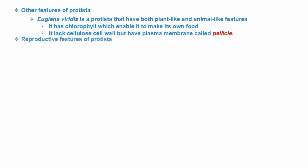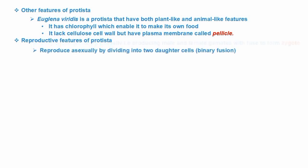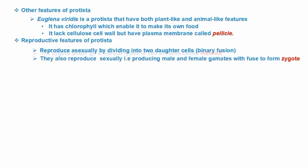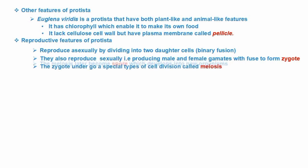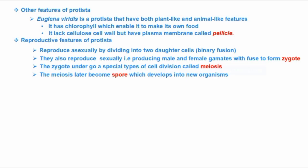Reproductive features of Protista: first, they reproduce asexually by binary fission. They also reproduce sexually by producing male and female gametes, which fuse to form a zygote. The zygote undergoes a special type of cell division called meiosis, and meiosis later produces spores which develop into new organisms.